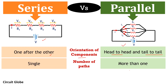The next parameter is the number of paths. In a series circuit, there is a single path for the flow of current. While in a parallel circuit, the current flows through multiple paths. The number of parallel paths depends on the number of components present in the parallel circuit.